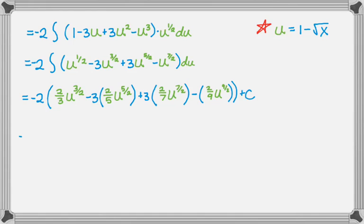So the first thing is negative 2 and the 2 thirds gives me negative 4 thirds, and then substitute for u. And then negative 2 times negative 3 times 2 fifths is going to be plus 12 fifths, and then substitute for u.